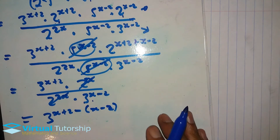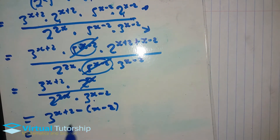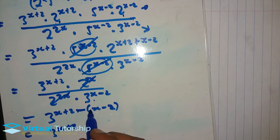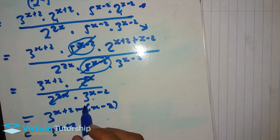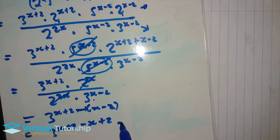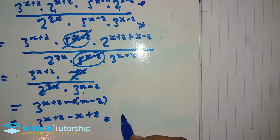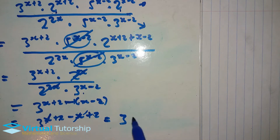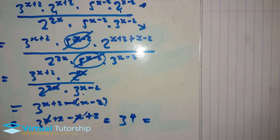Remember, when dealing with a binomial inside brackets, the negative sign affects both terms. So it becomes negative 1 times x which is negative x, and negative 1 times negative 2 which is positive 2. The 3 to the x terms cancel, leaving 2 plus 2 which equals 4. So 3 to the exponent 4 in exponential form equals 81.